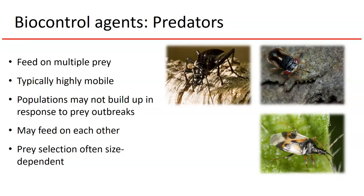Another drawback of predators is that they may feed on one another — what's sometimes referred to as intraguild predation. This predator-on-predator interaction can reduce the effectiveness of predator populations at suppressing pests. Predators are also often size-dependent: the prey they will feed on typically has to be of a specific size class, because predators have to capture, subdue, and consume their prey. Larger prey can only be handled by larger predator species, so you need a diversity of predators to handle the diversity of pest species in a cropping environment.